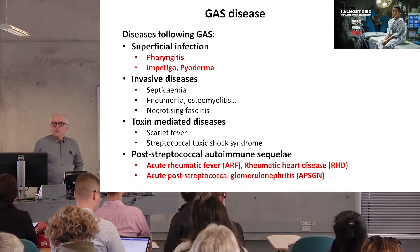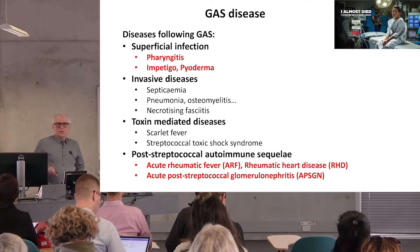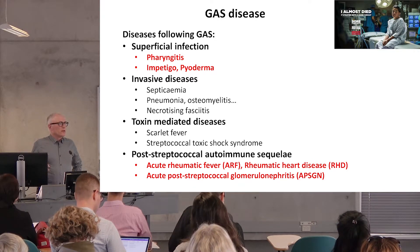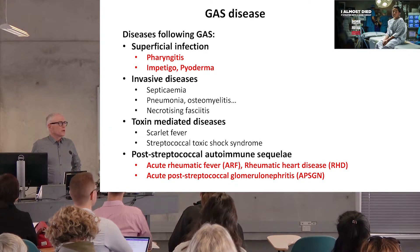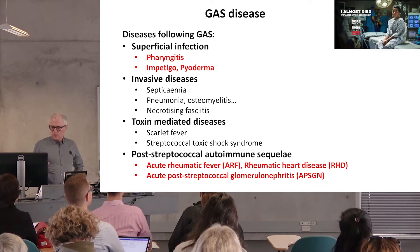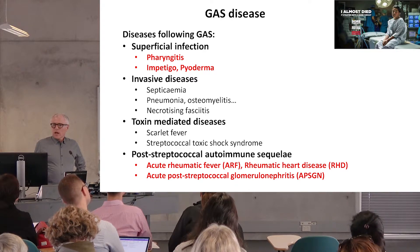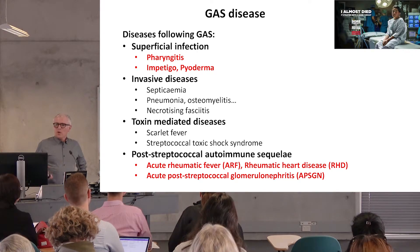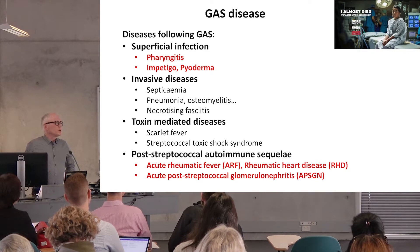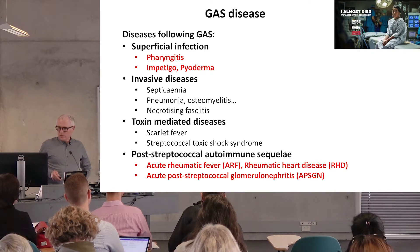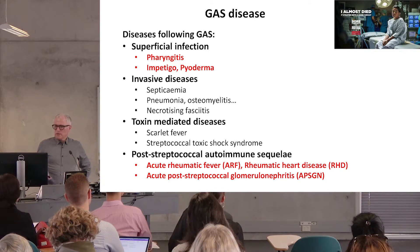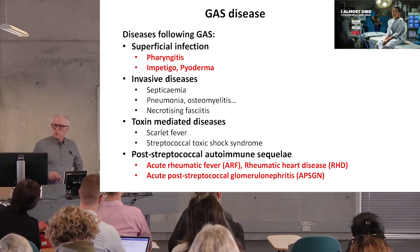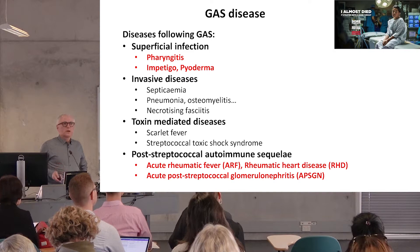Many of you know that GAS, or group A strep, strep A, is certainly a bacteria that we should be very concerned about. It has so many manifestations. You've already heard about impetigo, pyoderma, and obviously pharyngitis as the superficial infections. A range of other severe consequences. And particularly today we're thinking about the post-streptococcal effects — acute rheumatic fever, rheumatic heart disease, and acute post-streptococcal glomerulonephritis.